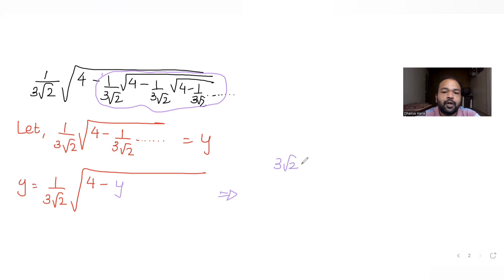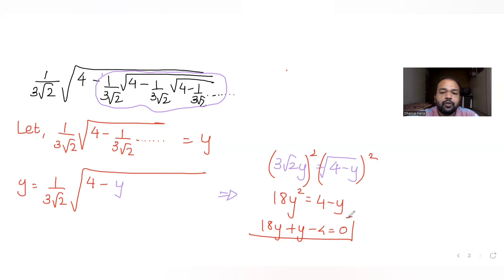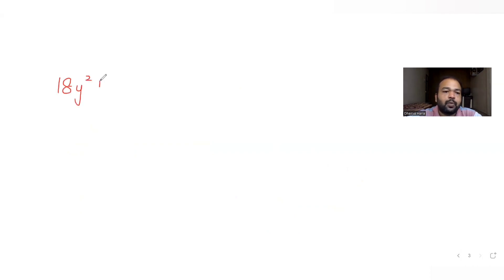So once I write that as y, I can write: 3 root 2 times y equals square root of 4 minus y. Taking 3 root 2 to the other side: 3 root 2 · y = 4 minus y. Now squaring both sides, 3 squared times 2 is 18, so 18y² equals 4 minus y, giving us 18y² + y − 2 = 0.